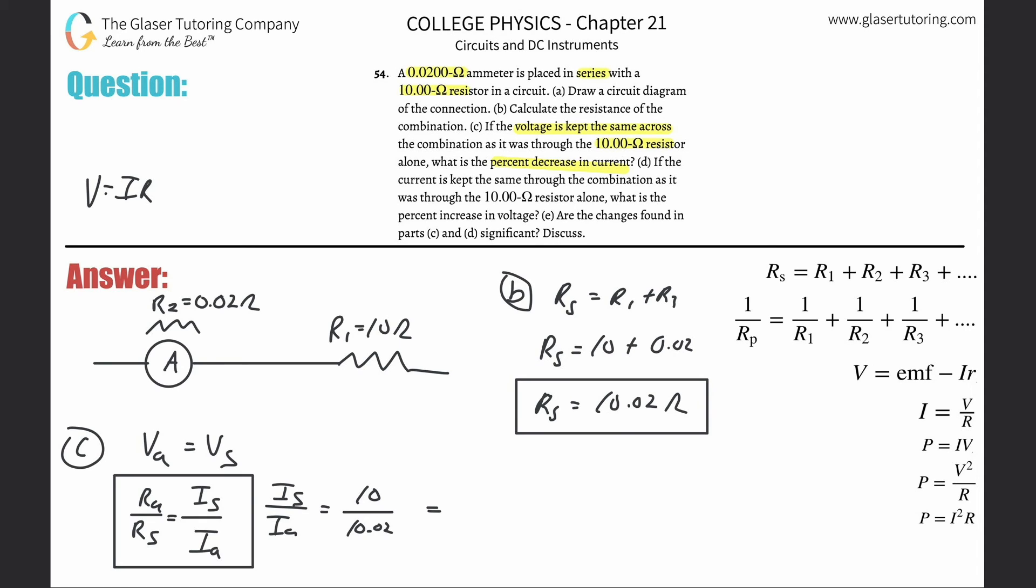That represents the fractional change. To turn this fractional change into a percent, if the fractional change is less than one, you take one and subtract this fractional change, then multiply it by 100 to get the percent. So take one, subtract that value from it, and then multiply by 100. This works out to be about 0.1996 percent. That's the percent change - very, very small.